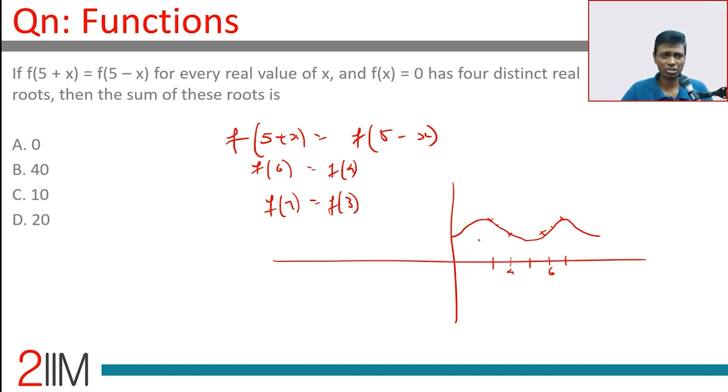It has four distinct real roots. So let's break this framework. Let's assume that it cuts somewhere here and then cut somewhere here, two roots. Therefore it will cut here and cut here, four roots.